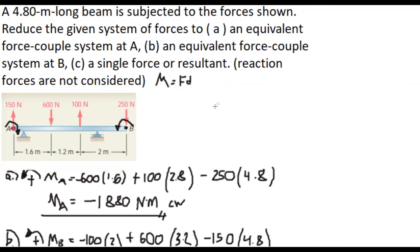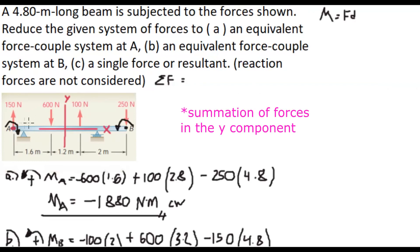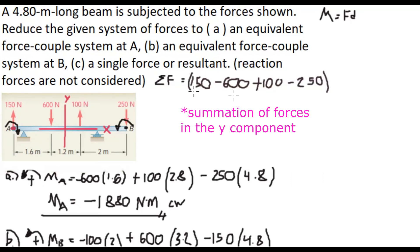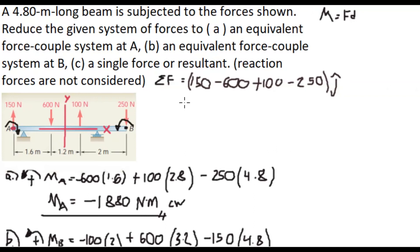For part C, we are tasked to find the single resultant force. To get the summation of forces, we add all forces in the Y direction: 150 N upward is positive 150, 600 N downward is negative 600, 100 N upward is positive 100, and 250 N downward is negative 250. Adding everything, our summation of forces equals negative 600 N in the J direction.